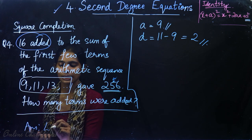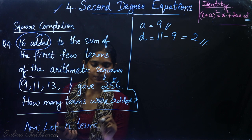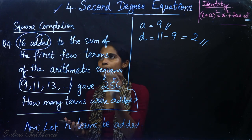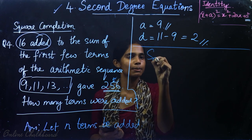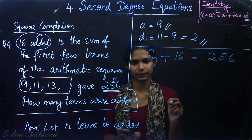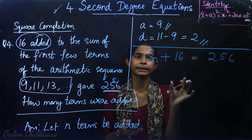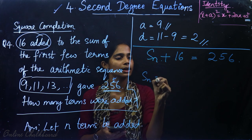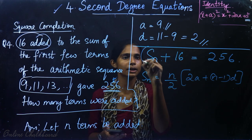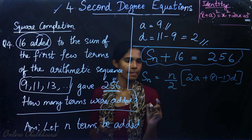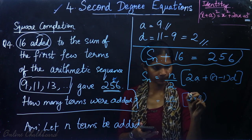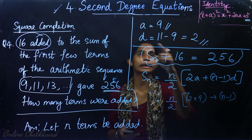Let n terms be added. We do not know how many terms, so we use n. The sum of the first n terms Sₙ, plus 16, equals 256. Now, using the formula Sₙ = n by 2 into (2a plus n minus 1 into d), substituting a = 9 and d = 2.